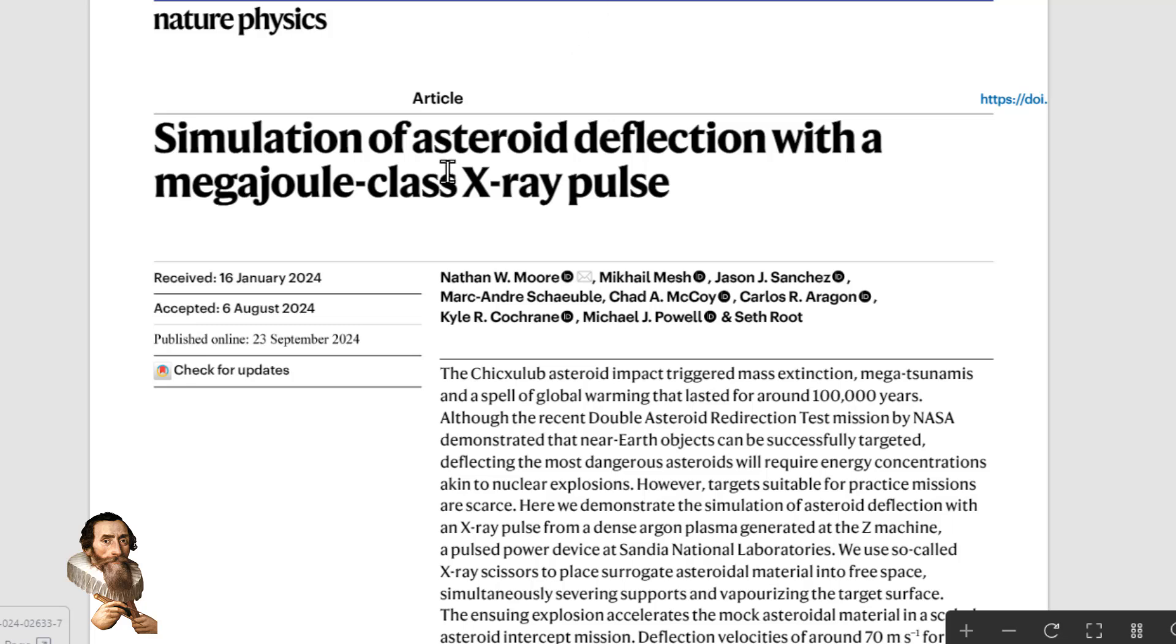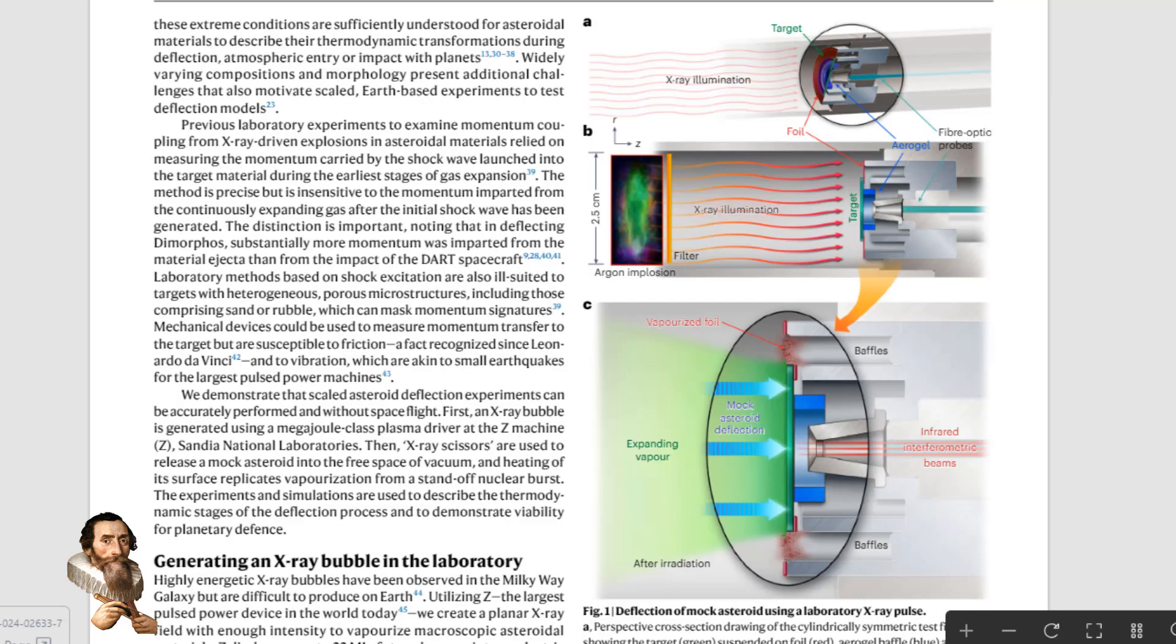A new study proposes that radiation from a nuclear explosion, specifically X-rays, could vaporize the surface of an asteroid and alter its trajectory, potentially saving our planet from a catastrophic impact.